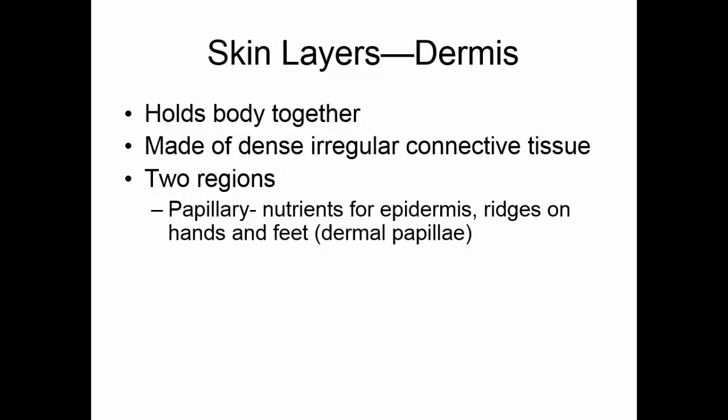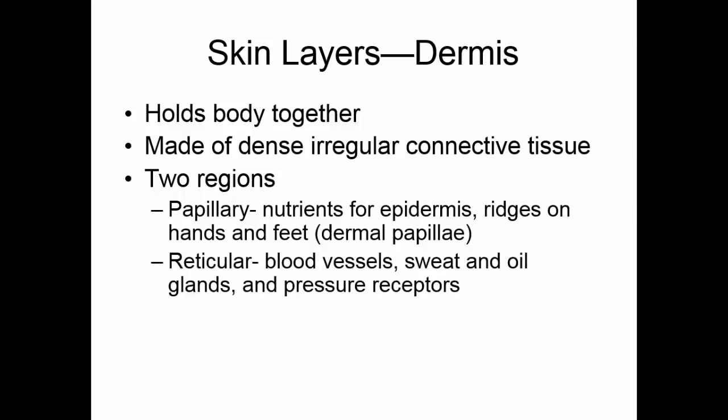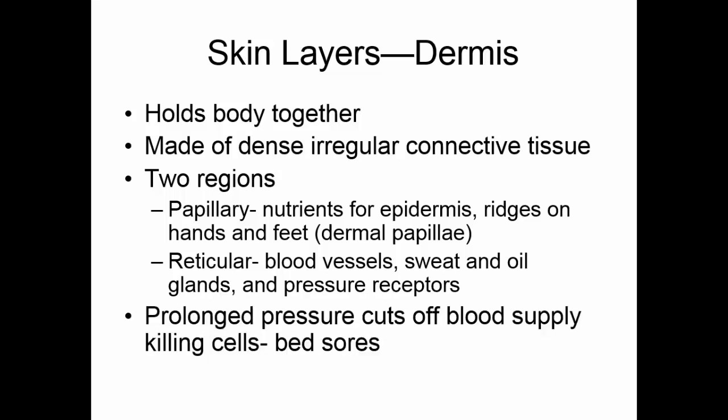Because epithelial tissue is avascular, the papillary layer feeds the epidermis. The other layer of the dermis is the reticular layer, which has a lot of collagen fibers and is where most of the organs are found: the blood vessels, the sweat and oil glands, and the various pressure receptors. If there is prolonged pressure on the dermis, the blood supply can be cut off and cells in the dermis will die. This is what happens when someone lays in one spot too long, with bones putting prolonged pressure on the dermis.